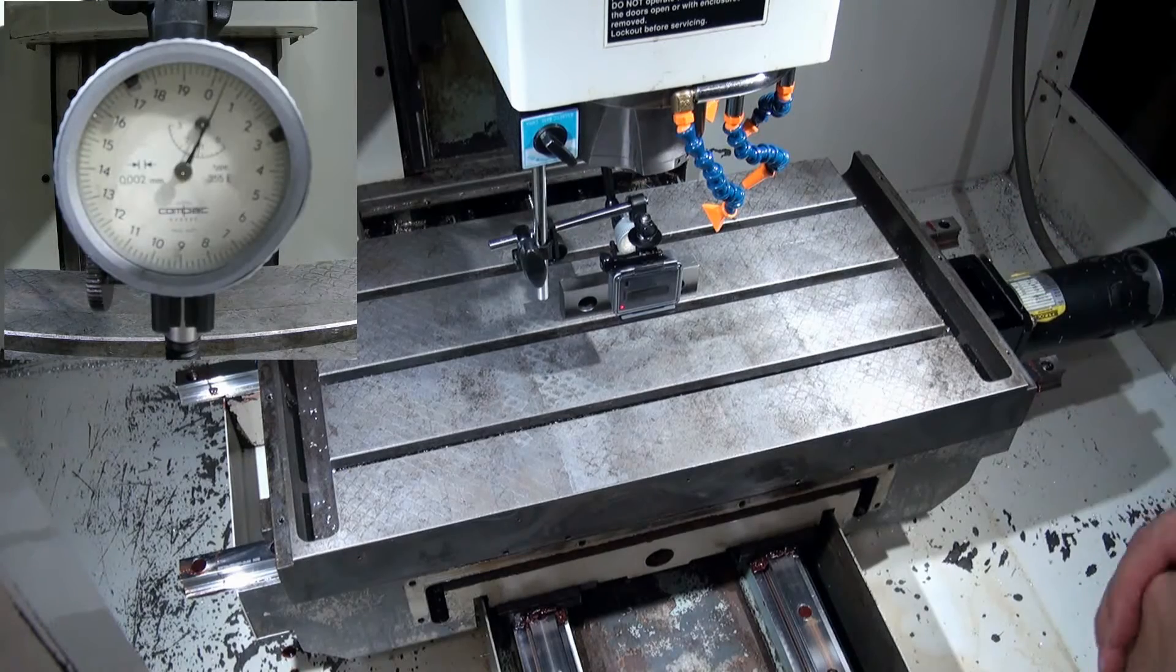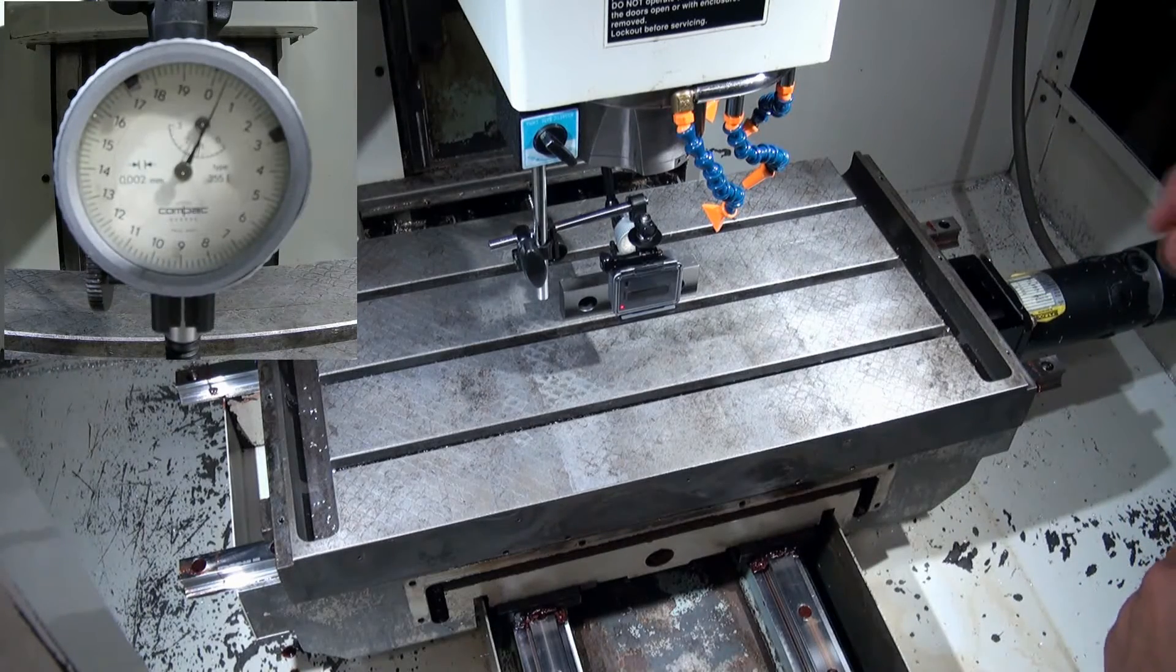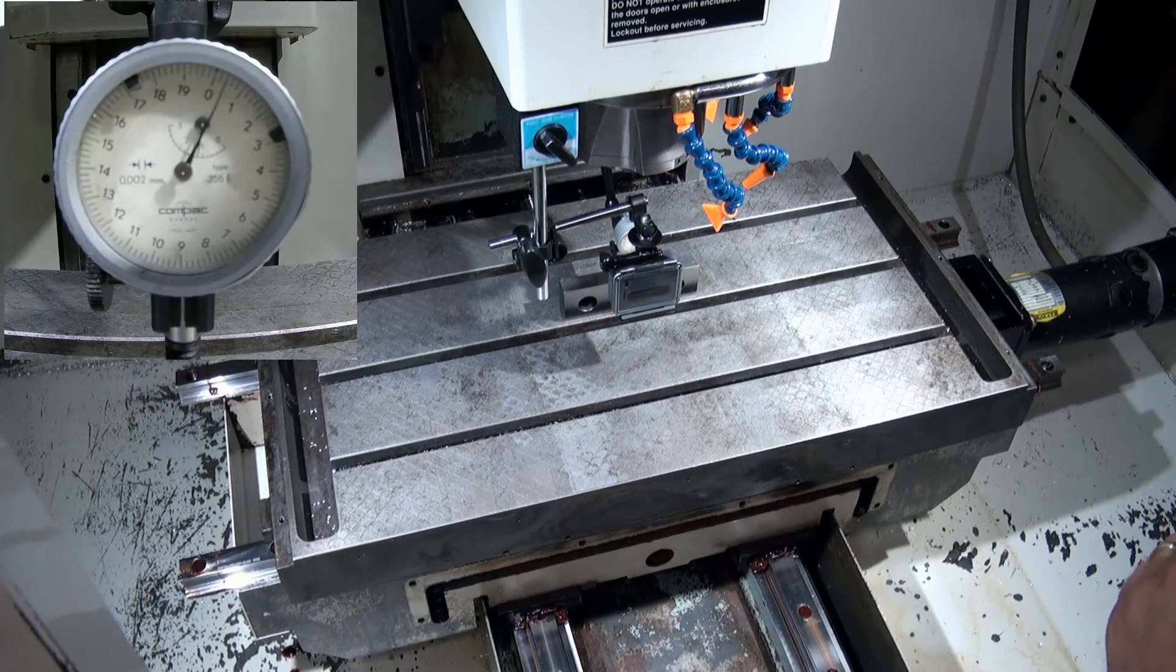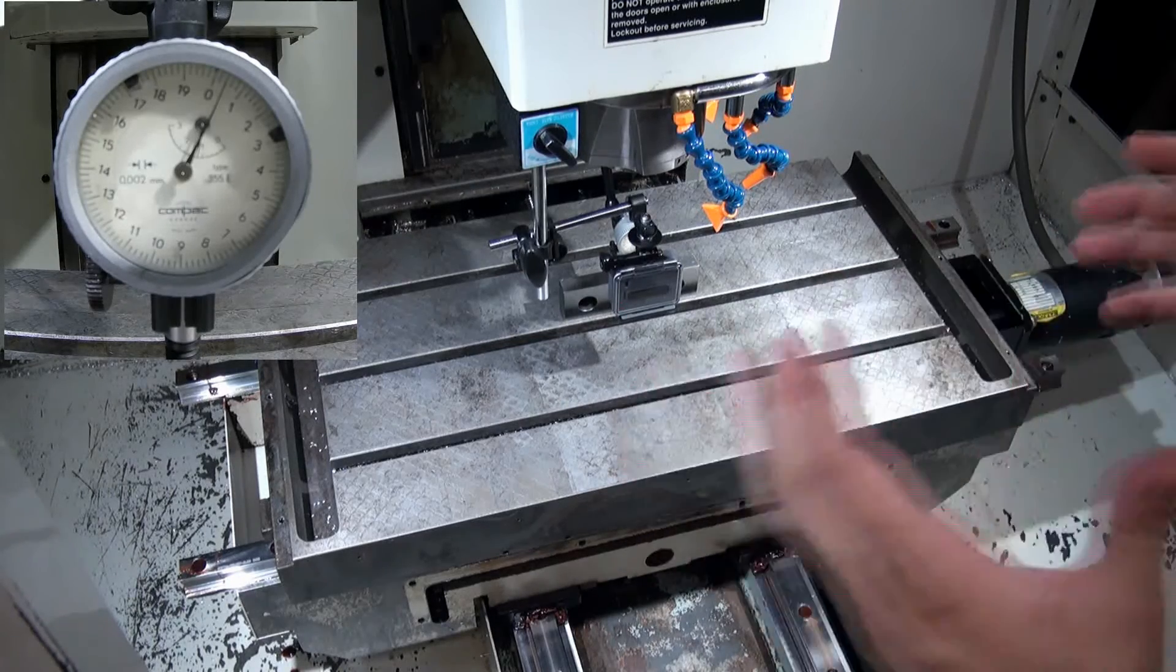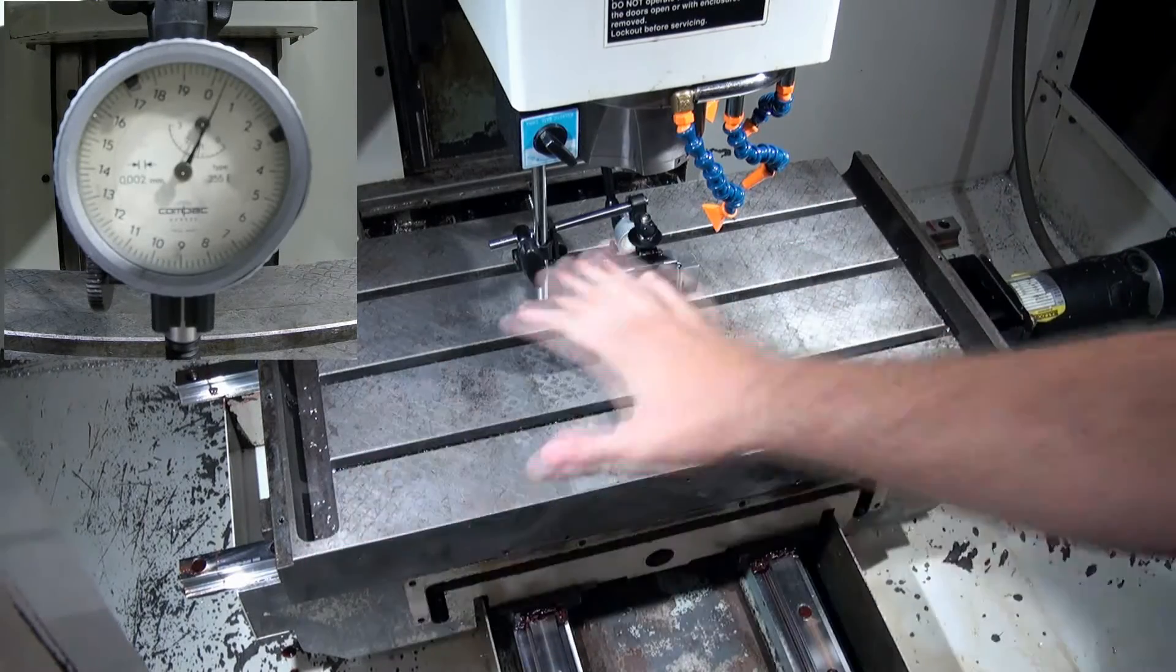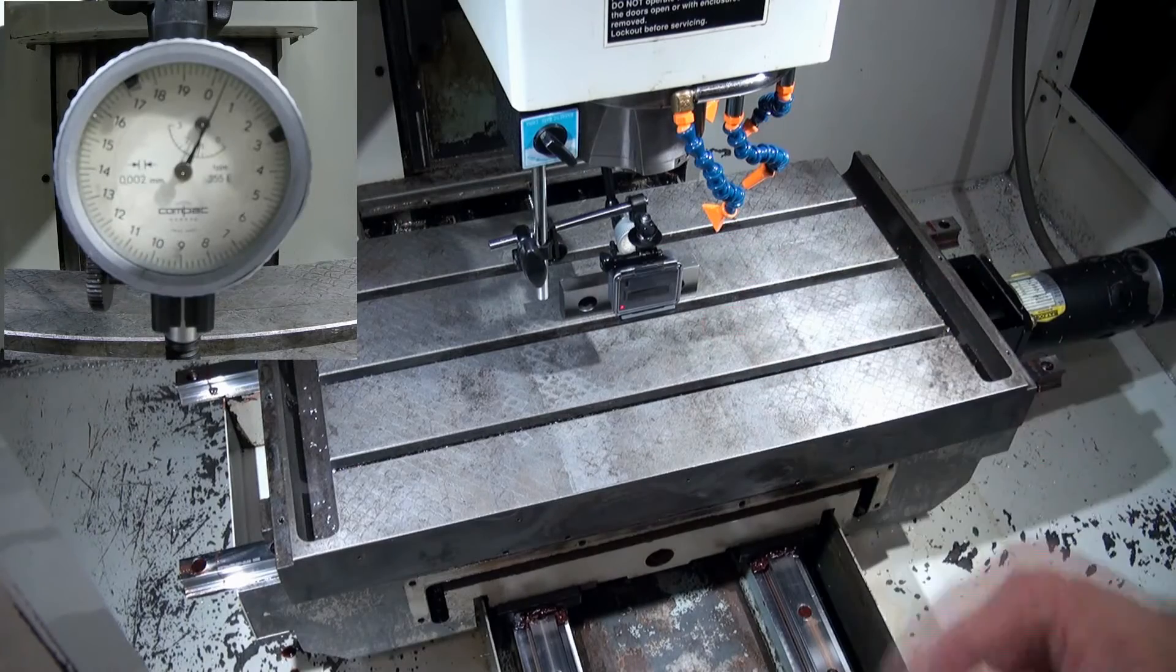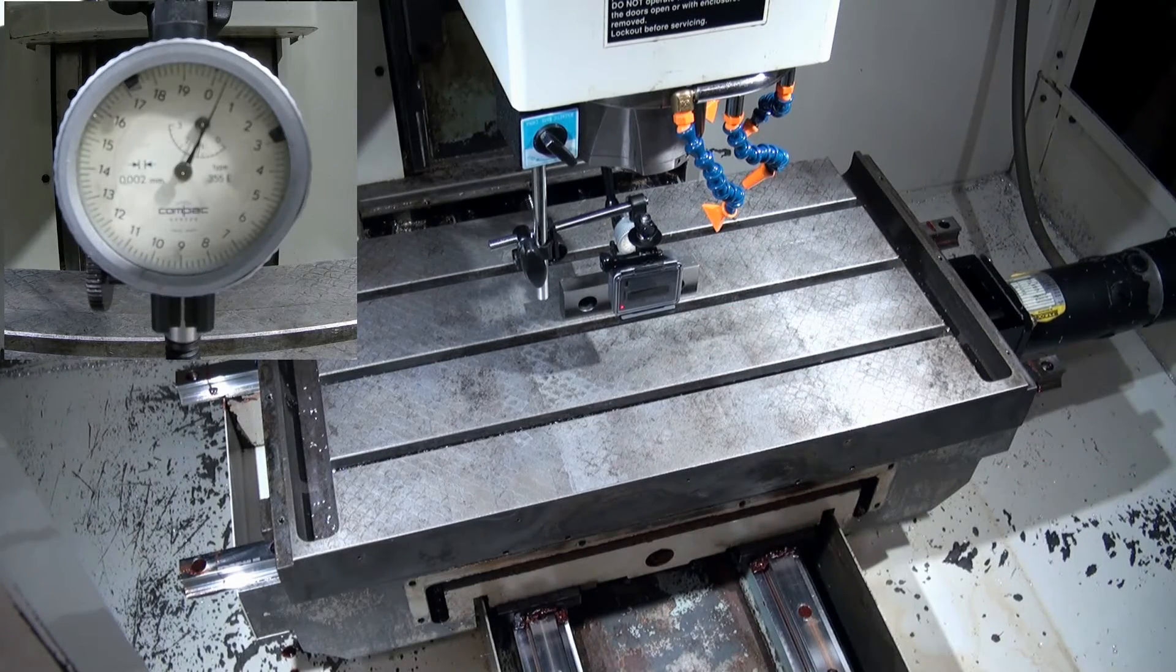Each number on the indicator is relative to 0.01 millimeters or four ten-thousandths of an inch roughly. Each hash mark on this indicator is 0.002 millimeters, or about 75 millionths of an inch. So it's an extremely sensitive indicator, so we'll be able to see how much variation we have on our table. The first thing we'll do is run side to side on X and see how X looks, and then we'll run forward back on Y to see how Y looks.